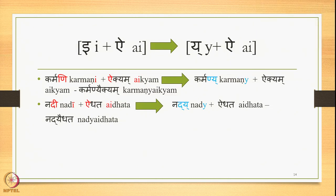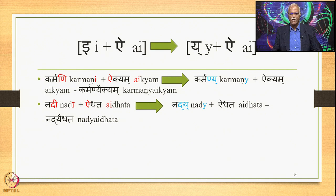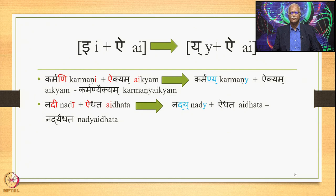For E followed by I in Samhita mode, 6.1.77 applies giving Y followed by I. 'Karmani + Aikyam', where E is followed by I, gives 'Karmaniya Aikyam' — unity in action. Then 'Nadi + Aidhata' (Aidhata is the past tense of Edha, meaning to grow): the environment triggers 6.1.77 and gives 'Nadiya Aidhata'.